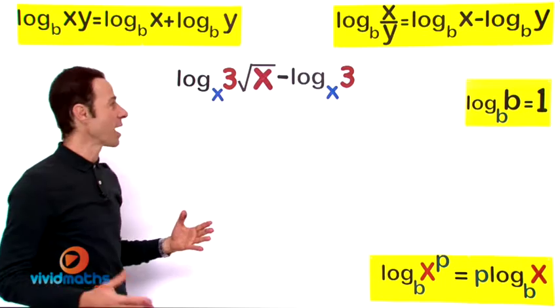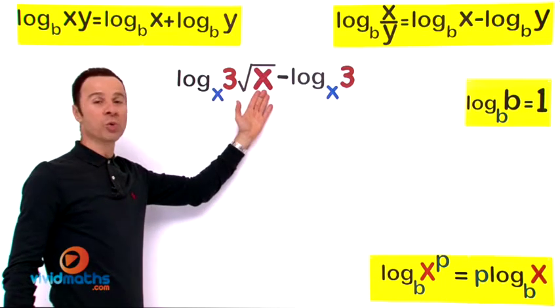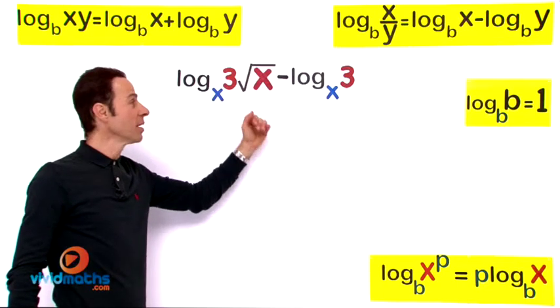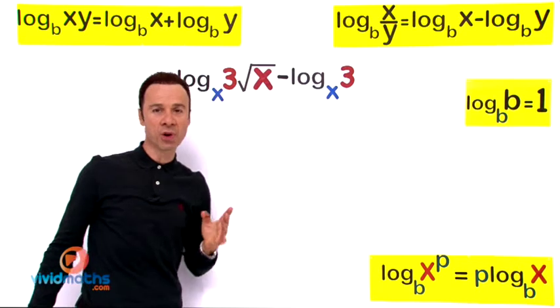So first of all, let us identify what we have here. We have a base of x and we also have a variable of x here as the number up there and a base of x right over there. We are going to use two of the log laws.